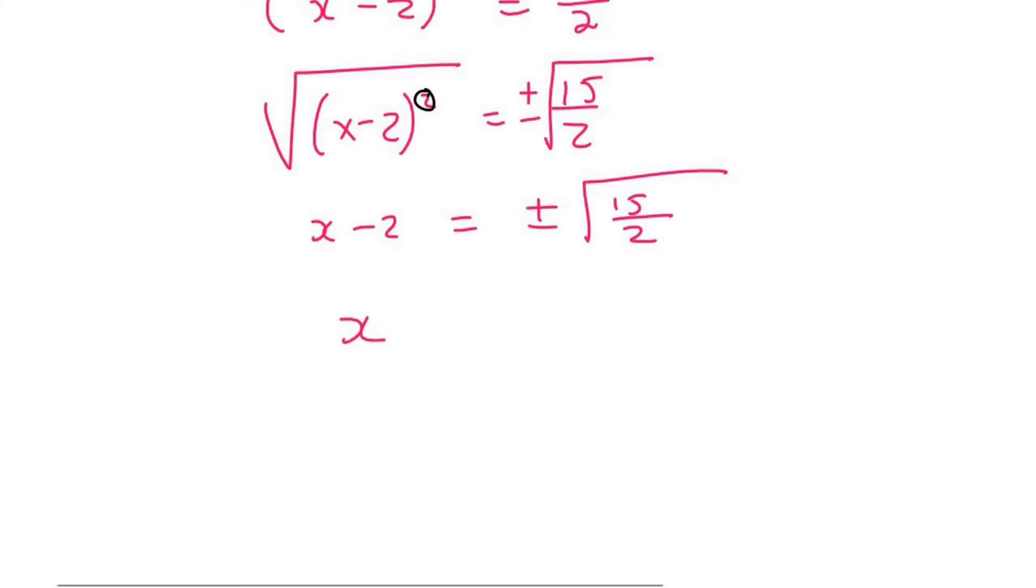Then to get x alone, I'm going to take the 2 over. So we're going to end up with this, like that. And so our first answer we can get by keeping this a positive. So that's going to be square root 15 over 2 plus 2.